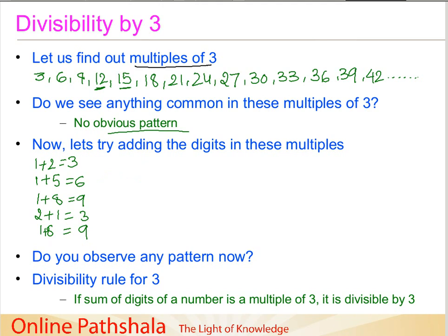Moving on to 24: 2 plus 4 equals 6. Then 27: 2 plus 7 comes out to be 9. And 30: 3 plus 0 comes out to be 3.